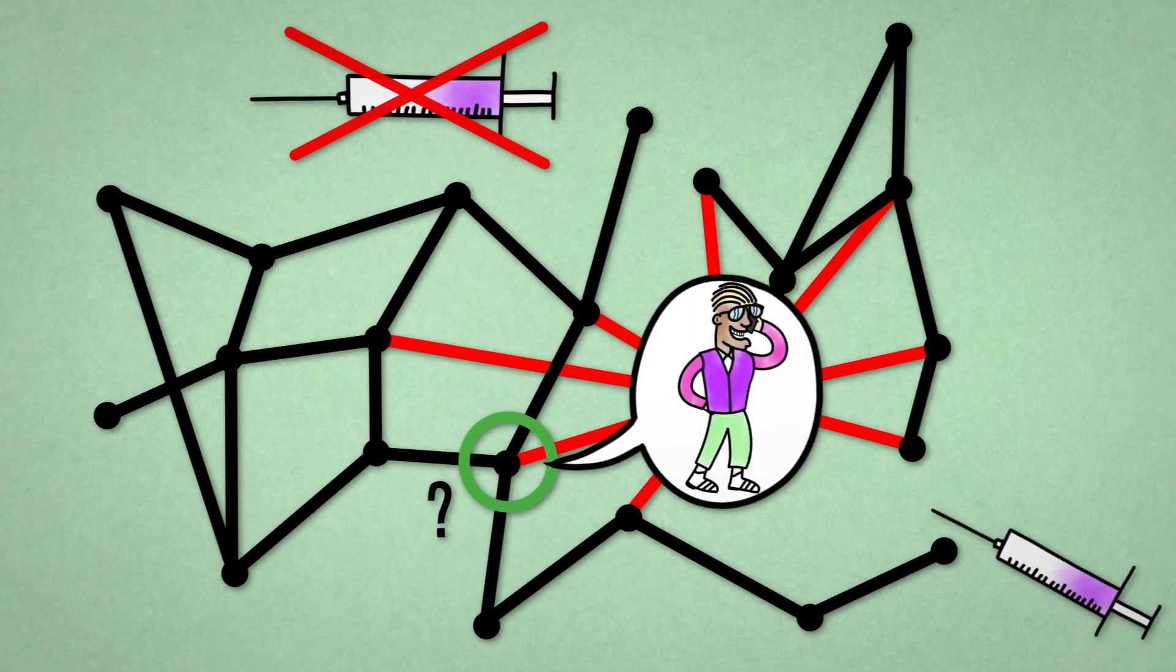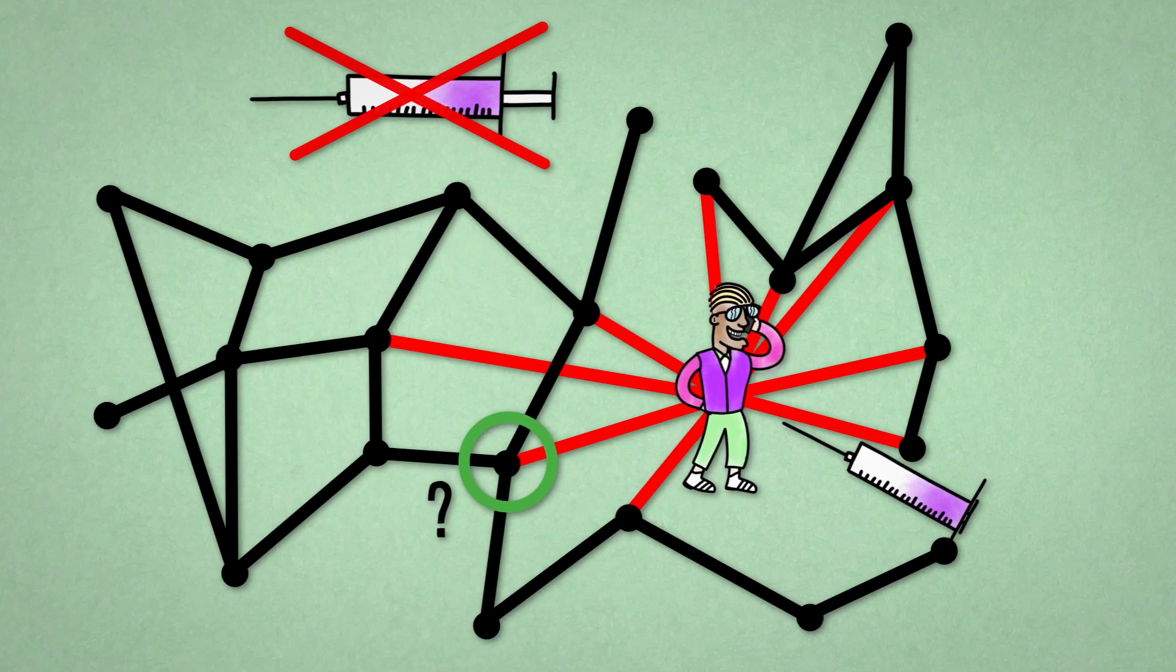It's those people you will vaccinate. Because of the friendship paradox, these people are more important for the spreading of the disease, maybe even super spreaders. They are the ones you have to target.